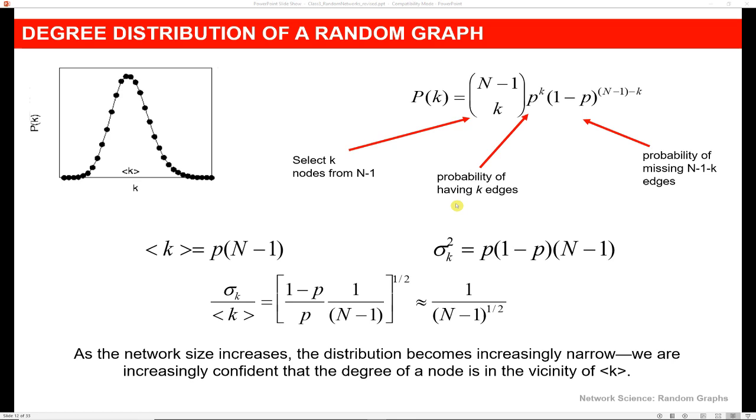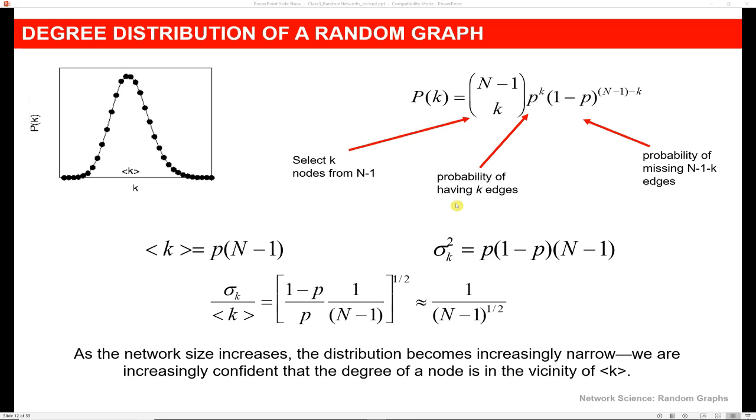We want to talk about different properties of random graphs. I know there's a lot of math on this slide, and I want to leave it there in case you're so inclined as to want to get into it a little bit further. But the takeaway here is that as the network size increases, so we're adding more and more nodes, you have a narrow distribution and you have increased confidence that the degree of a node is going to be around the average degree.